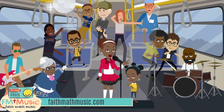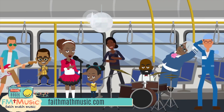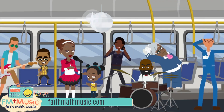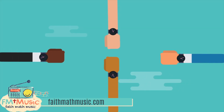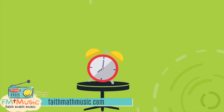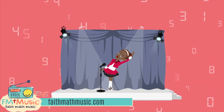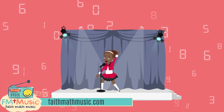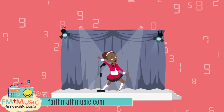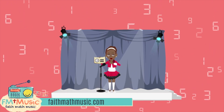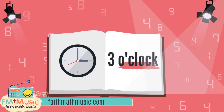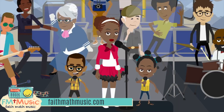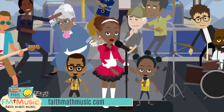Once you talk minutes, you have to know that there's sixty. So count by five from one through twelve. When you get to sixty, say o'clock — say you tell the time well. What time is it?